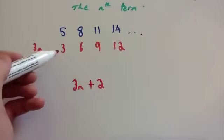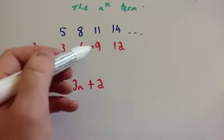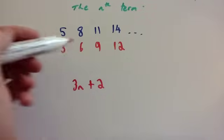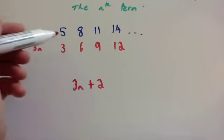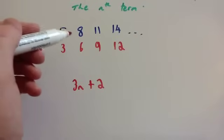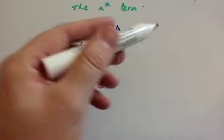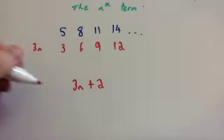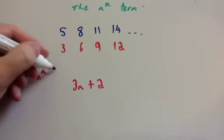When you think about it, the 3 times tables is 3, 6, 9, 12, and 2 more than that would be 5, 8, 11, 14, and so on. So 3n + 2 is the nth term.